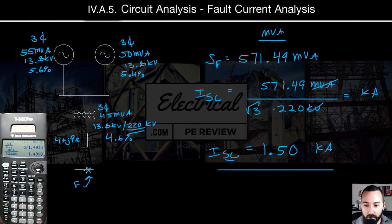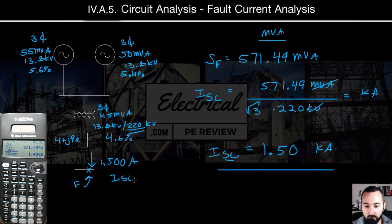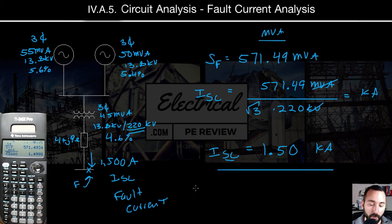So that means this fault right here, we have a total amount of current that's 1,500 amps total. And that is our I short circuit or our fault current. All right, let's solve the same problem using the per unit method and verify that we get the same answer. So stay tuned.